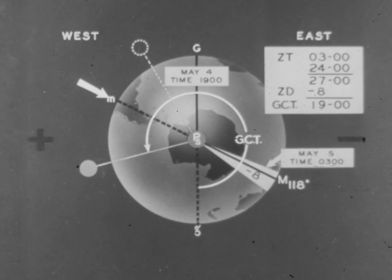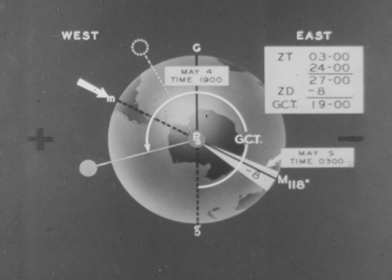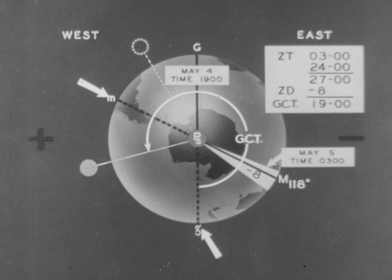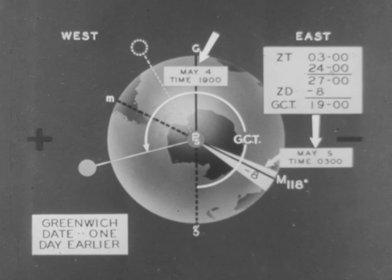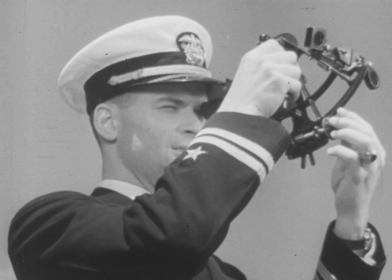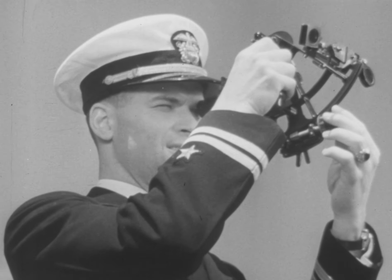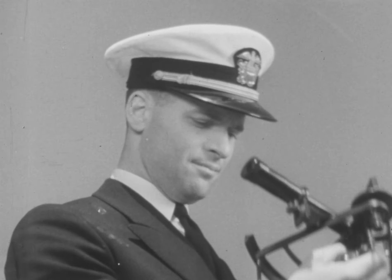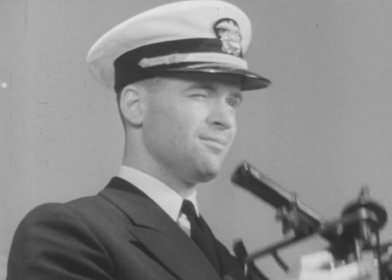Note on the diagram that the sun has transited the lower branch of the local meridian but has not reached the lower branch of the Greenwich meridian. In this situation, the date at Greenwich is always one day earlier than the local date. In the foregoing discussion of zone and civil time, we have been considering the mean sun. However, the sun which we see transiting our meridian, and the one on which our navigator takes his observations, is the apparent or true sun.